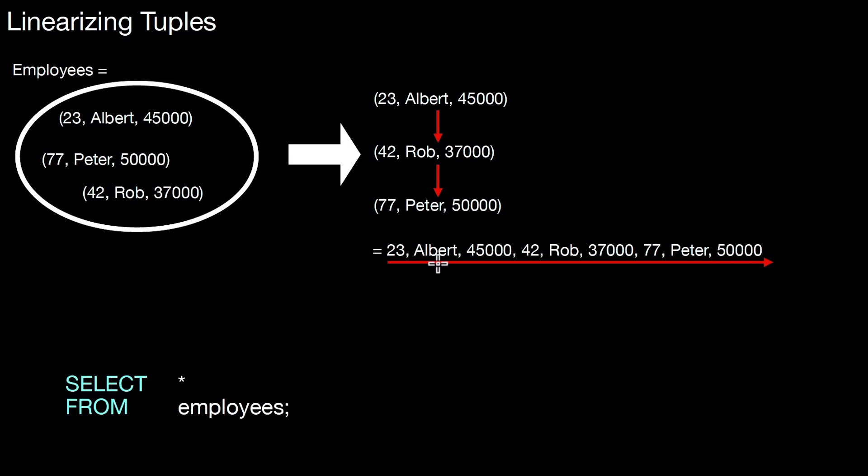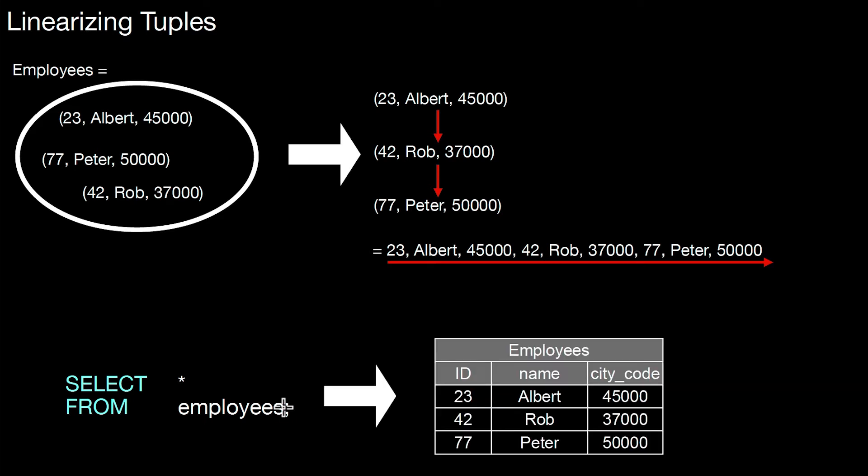Now, if you do a SELECT star for that table, the database will return those values in a specific order. The table you get back looks like that. And the misleading thing with tables is that it looks like as if the tuples were ordered. Here 23, Albert, 45,000 comes before this tuple, comes before that tuple. It looks like as if there were an order.